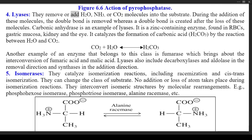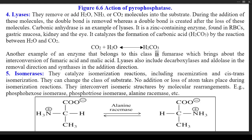Class 4: Lyases — they remove or add H₂O, NH₃, or CO₂ molecules to the substrate. During the addition of these molecules the double bond is removed, whereas a double bond is created after the loss of these molecules. Carbonic anhydrase is an example of lyases. It is a zinc-containing enzyme found in RBCs, gastric mucosa, kidney, and the eye. It catalyzes the formation of carbonic acid (H₂CO₃) by the reaction between H₂O and CO₂: CO₂ + H₂O → H₂CO₃. Another example is fumarase, which brings about the interconversion of fumaric acid and malic acid. Lyases also include decarboxylases and aldolase in the removal direction, and synthases in the addition direction.